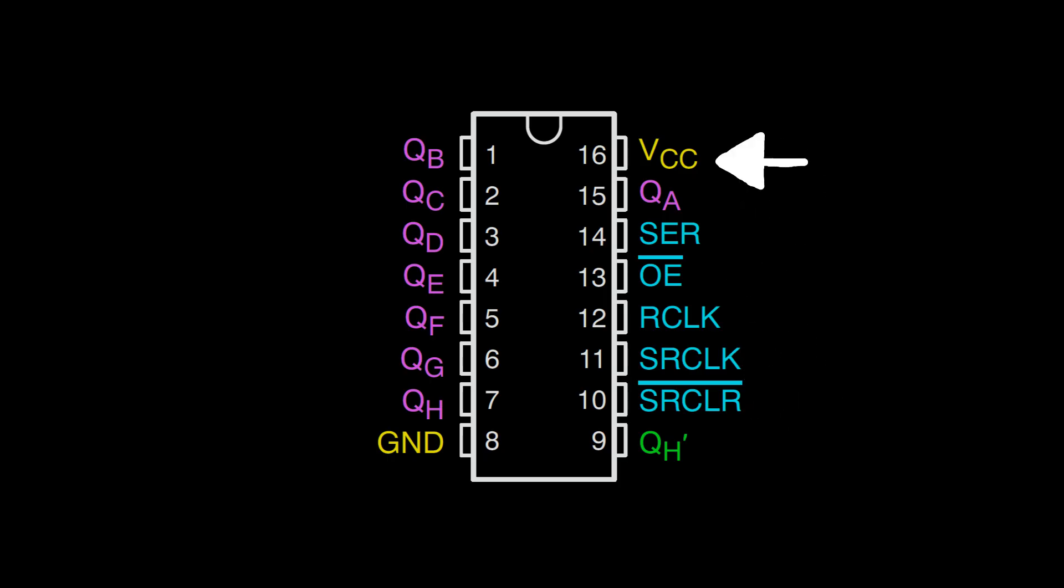The VCC pin is the positive voltage, and ground is zero volts, or ground. The three most important control pins are the SER, Rclock, and SRclock pins. I will call the SER pin the data line, and the Rclock pin will be the output clock, and the SRclock pin will be the input clock.